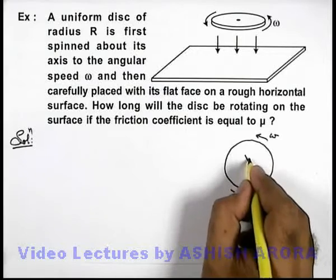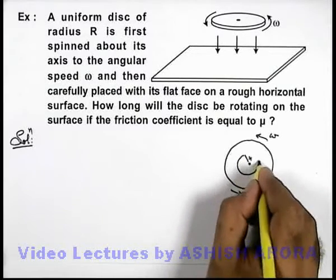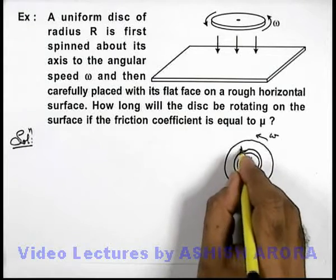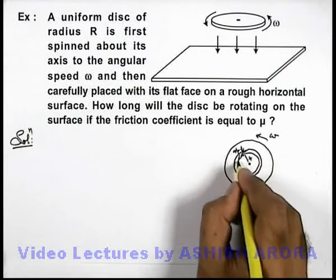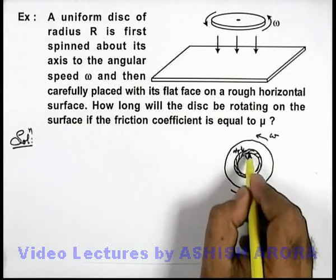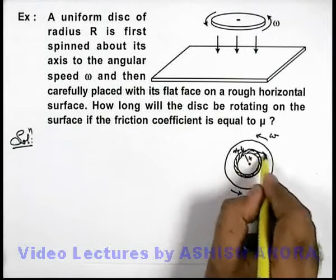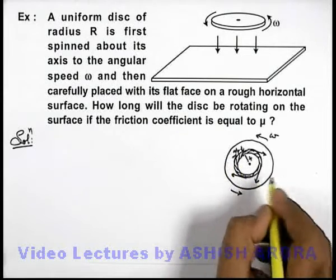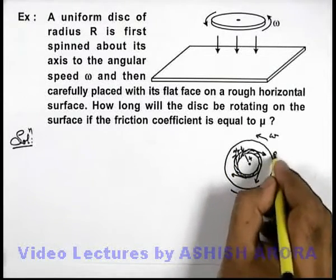In this situation, at every point tangentially friction will act in opposite direction. To analyze the friction, let's consider a small elemental ring which is of width dx and it is of radius x, which I have drawn here. At every point due to its anticlockwise motion, the friction will act on it in clockwise direction. I denote this friction by df.